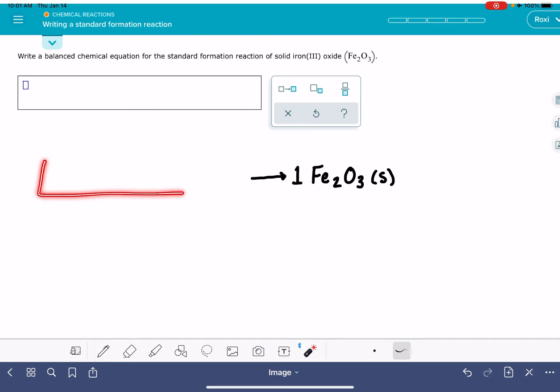On the reactant side, we have to predict and pick what the reactants will be. The standard formation reaction is showing the formation of, in this case, Fe2O3 from the elements, iron and oxygen, in what we say is their natural state, meaning the way that they're found in nature. For metals,